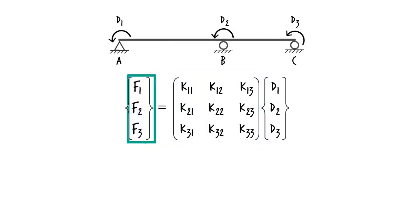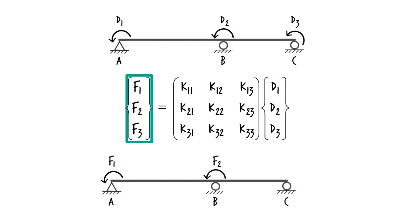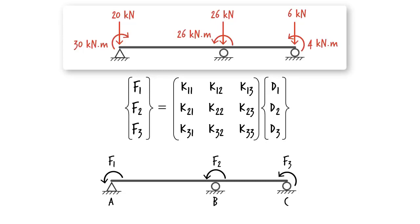This is known as the system stiffness matrix. F1, F2, and F3 are the joint loads in directions 1, 2, and 3 respectively. We just computed their values. F1 is negative 30 kNm, F2 is 26 kNm, and F3 is 4 kNm. Note that since the joints of the beam are not going to displace vertically, the vertical joint loads do not play a part in our formulation.